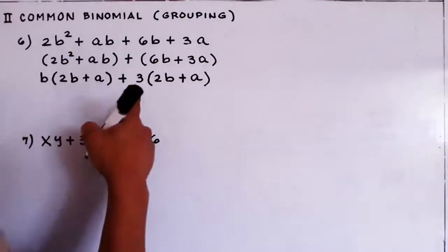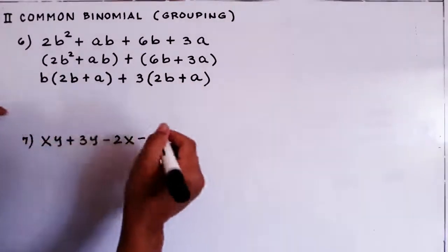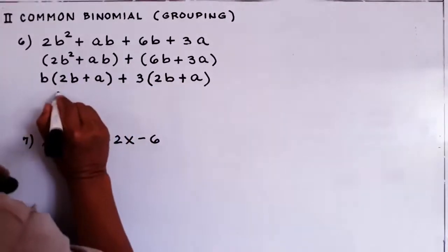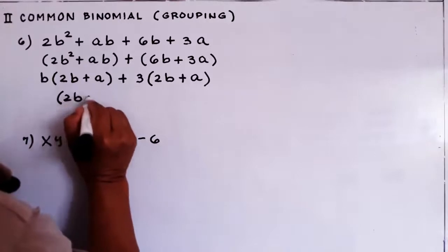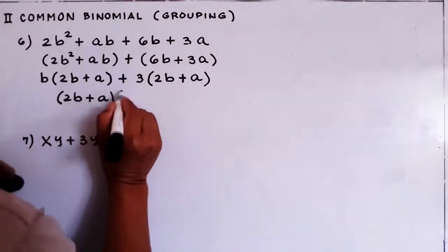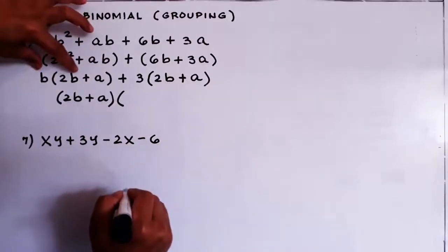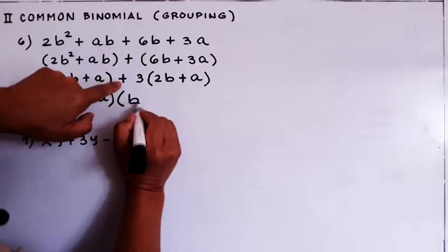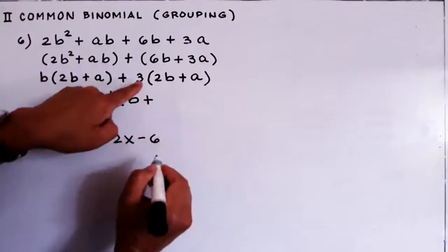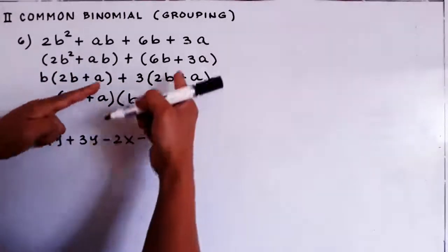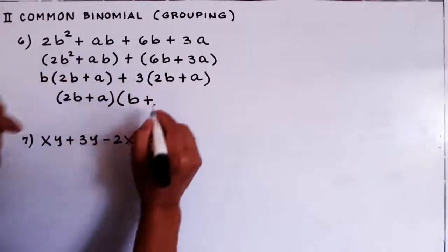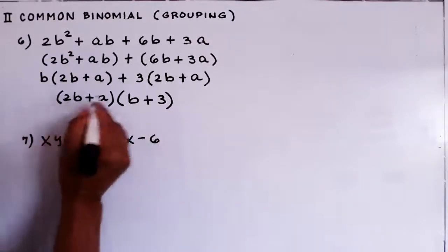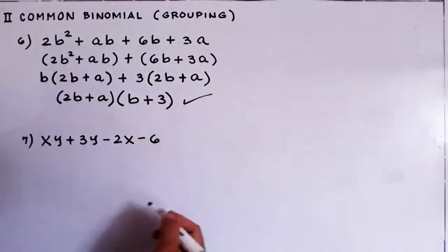Now we can see the common binomial in both the first group and second group, which is 2b plus a. We put 2b plus a, and then divide: the first group divided by (2b plus a) gives B, plus the second group divided by (2b plus a) — which equals 1 — leaves the 3. So our answer is (2b plus a)(b plus 3). We cannot factor this further, so this is our final answer.